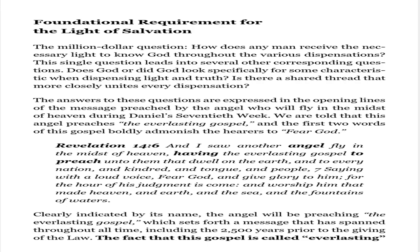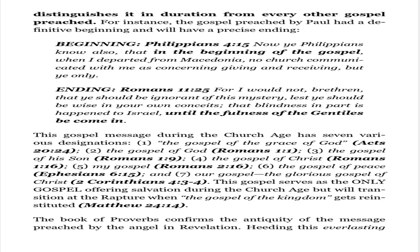Clearly indicated by its name, the angel will be preaching the everlasting gospel, which sets forth a message that has spanned throughout all time, including the 2,500 years prior to the giving of the law. The fact that this gospel is called everlasting distinguishes it in duration from every other gospel preached. For instance, the gospel preached by Paul had a definitive beginning and will have a precise ending. Beginning: Philippians 4:15 — 'Now ye Philippians know also, that in the beginning of the gospel, when I departed from Macedonia, no church communicated with me as concerning giving and receiving, but ye only.' Ending: Romans 11:25 — 'For I would not, brethren, that ye should be ignorant of this mystery, lest ye should be wise in your own conceits, that blindness in part is happened to Israel, until the fullness of the Gentiles be come in.'